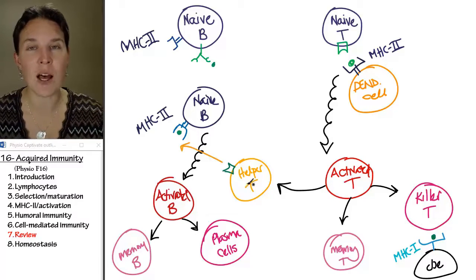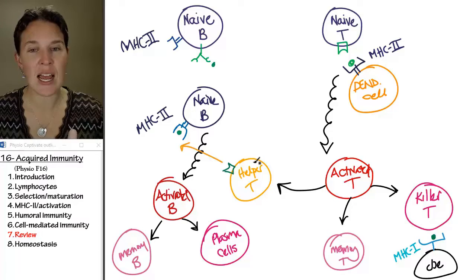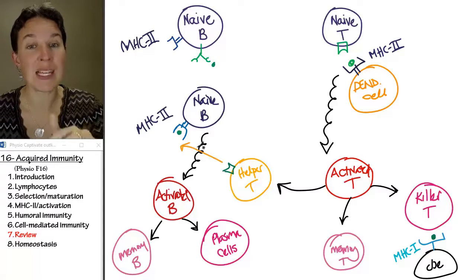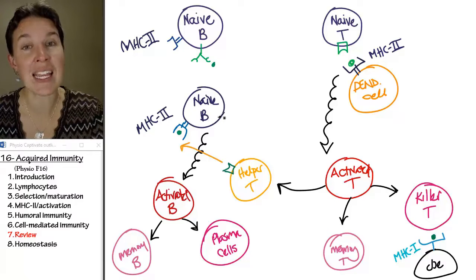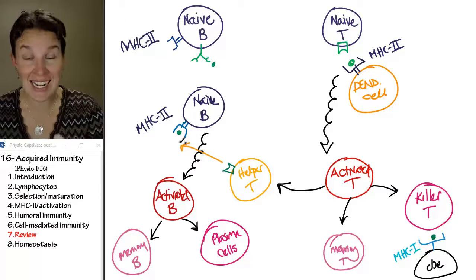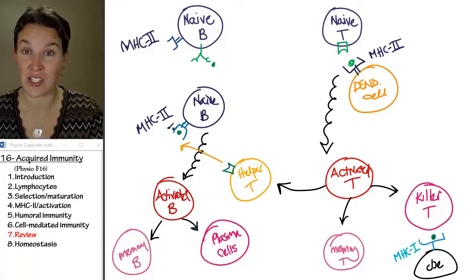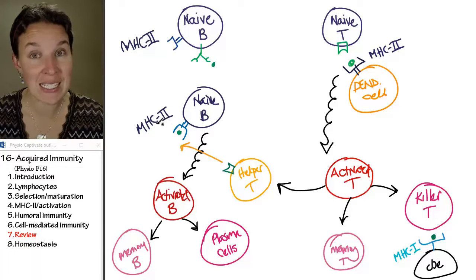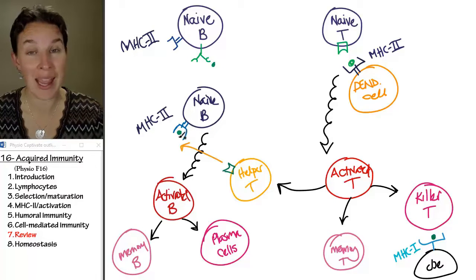If it becomes a helper T cell, this guy has the same receptor. It goes over to the B cell pattern, finds a naive B cell that's presenting the antigen on an MHC II platform. The helper T binds to the MHC II platform and the antigen.